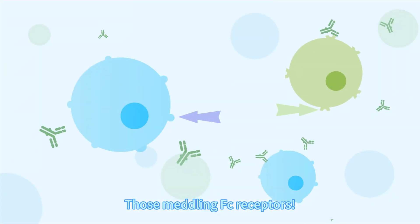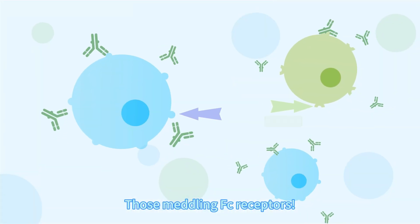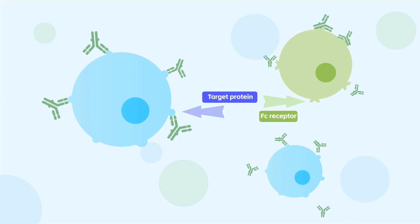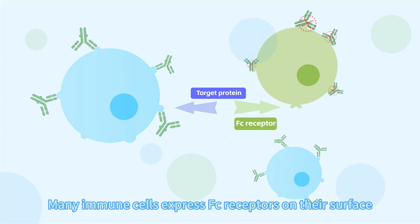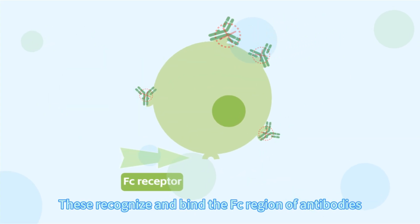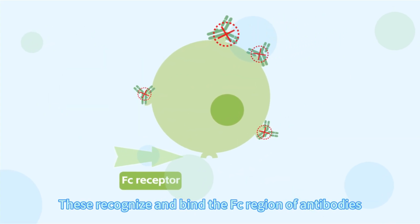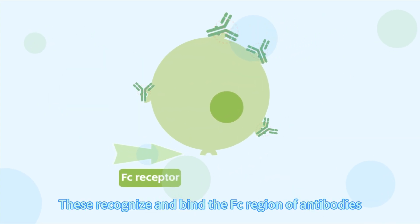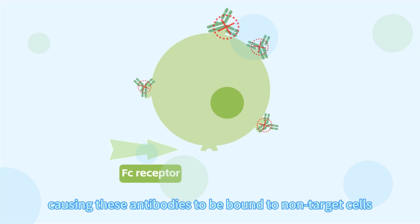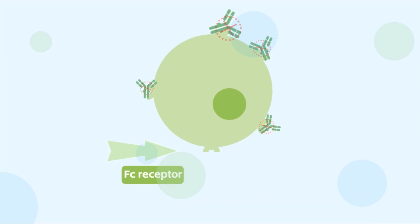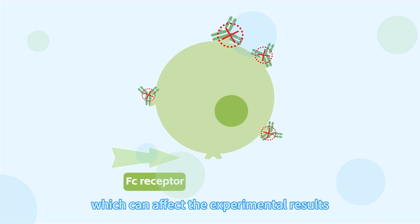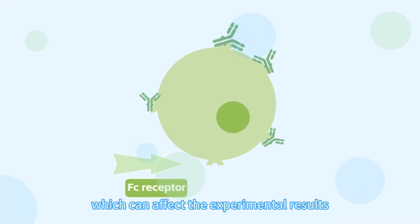Those meddling FC receptors! Many immune cells express FC receptors on their surface. These recognize and bind the FC region of the antibodies, causing these antibodies to be bound to non-target cells, which can affect the experimental results.